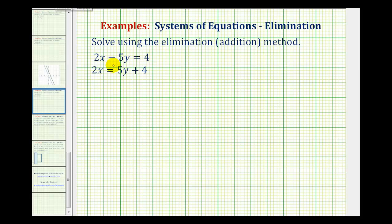So notice the first equation is already in standard form, so we'll just leave this one as is. We have 2x minus 5y equals 4, but for the second equation we'll have to subtract 5y on both sides, so we would have 2x minus 5y equals 4.